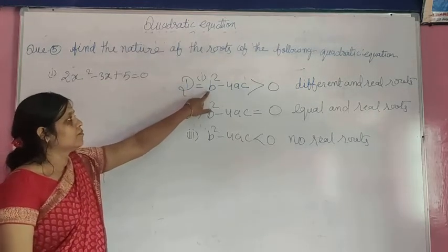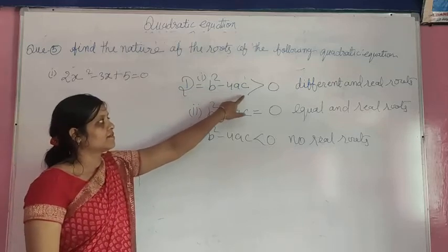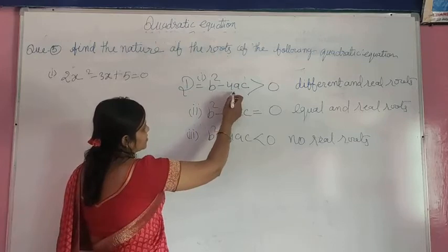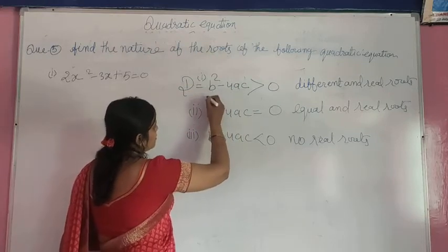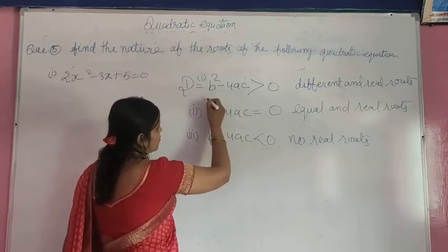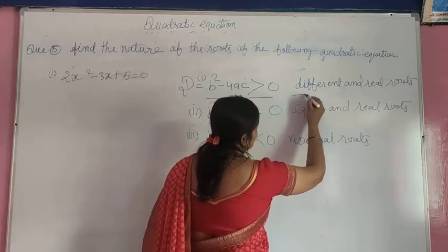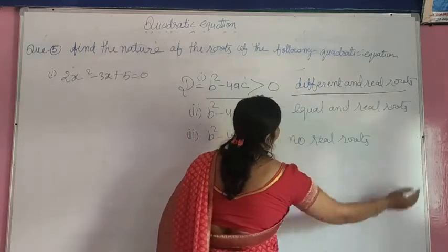First condition: b² - 4ac is greater than 0. b² - 4ac greater than 0 means agar b² - 4ac ki jo value hai, positive value aati hai, toh different and real roots hote hai jinko find bhi karna hai.